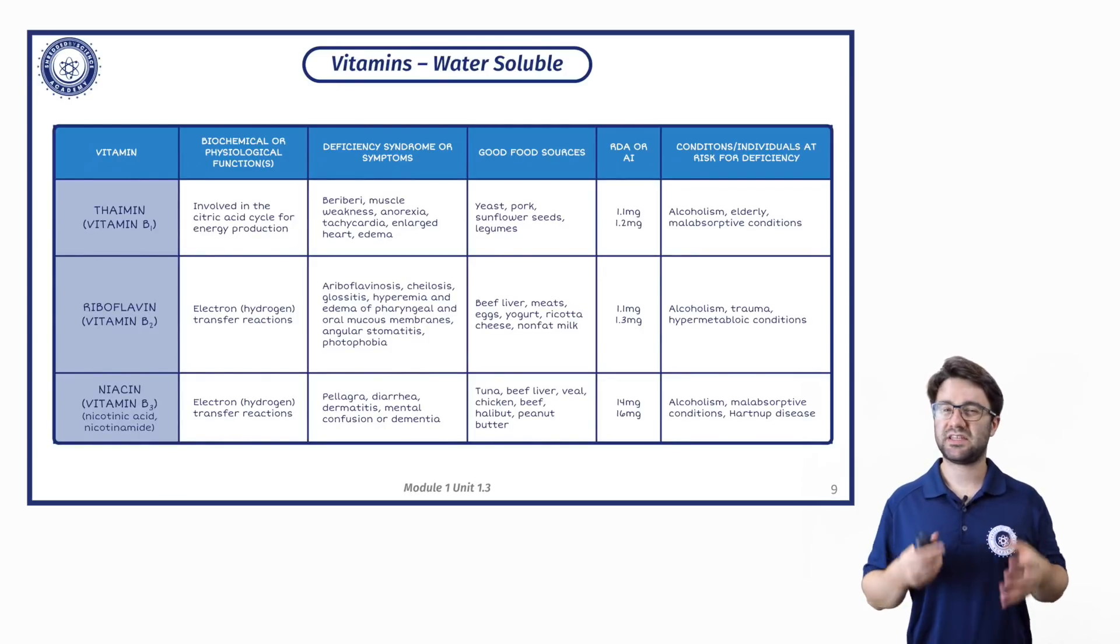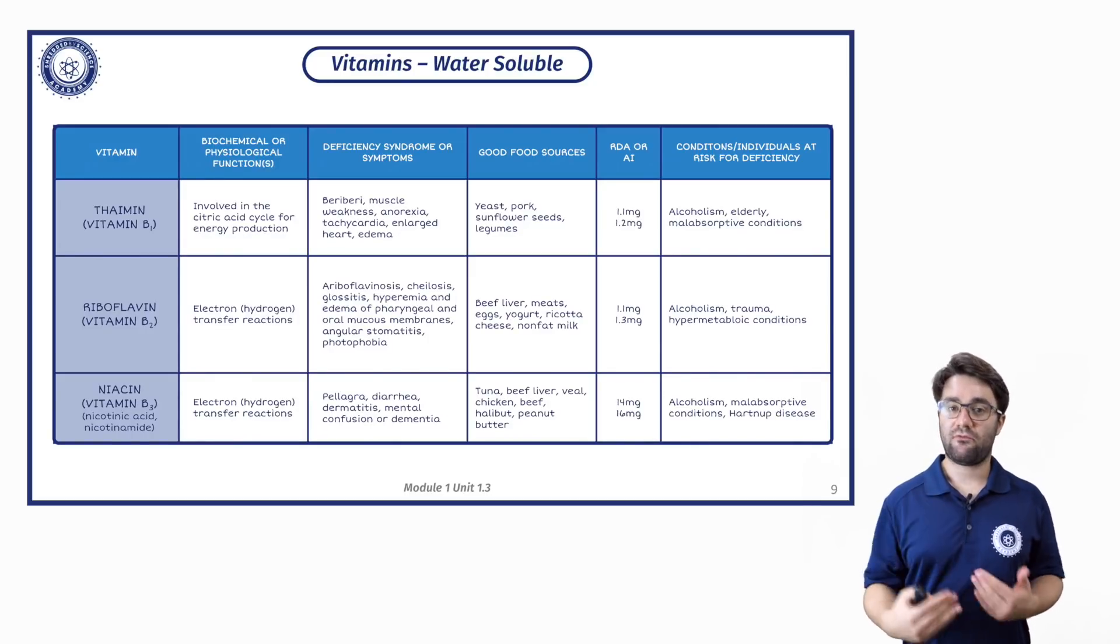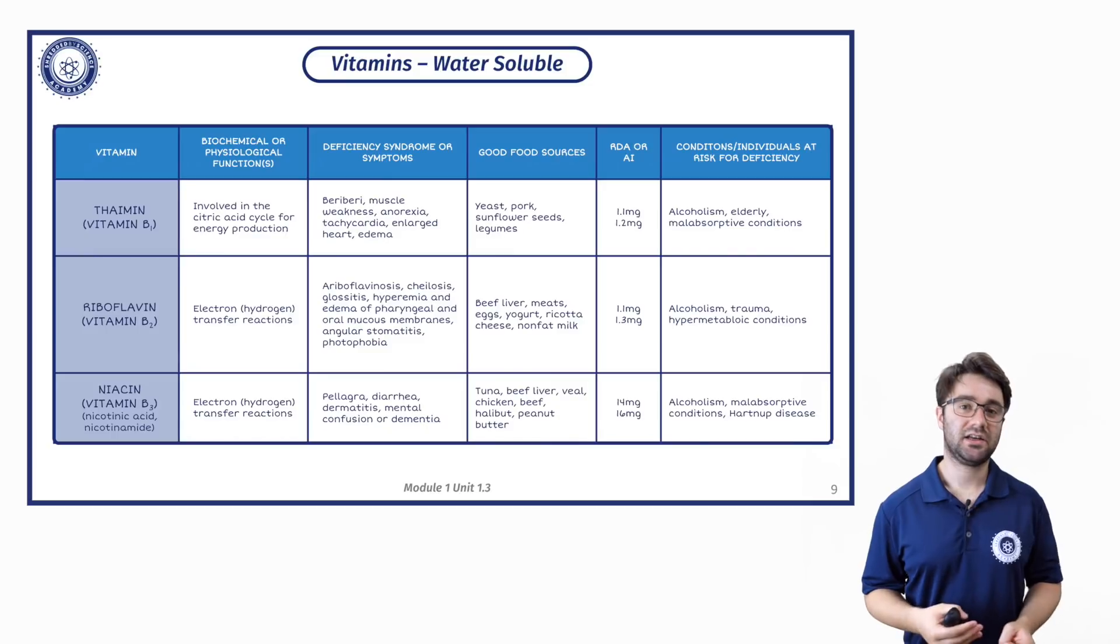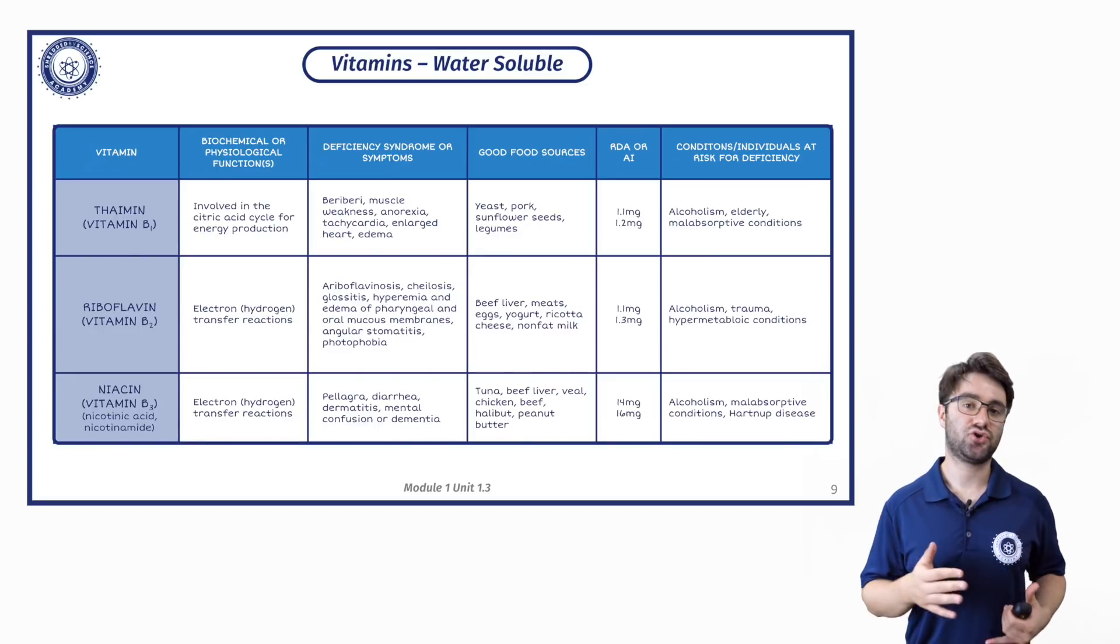The B vitamins tend to be involved in energy production, so they're either directly involved in the citric acid cycle in the case of vitamin B1, or vitamins B2 and B3 are involved in electron transfer chain reactions.